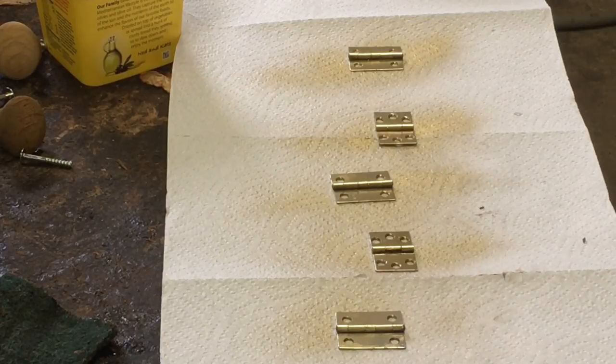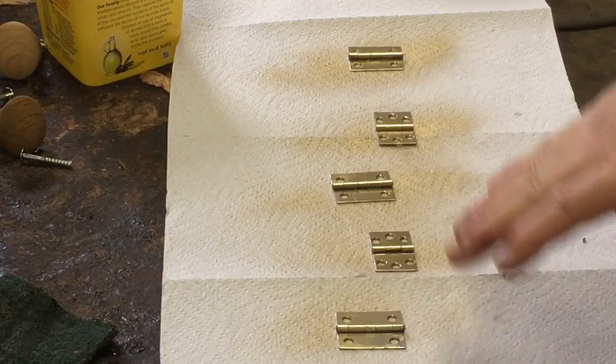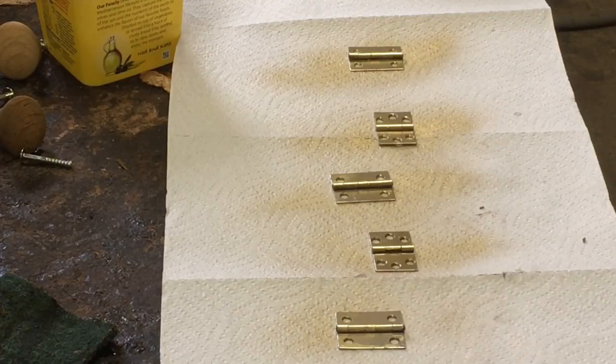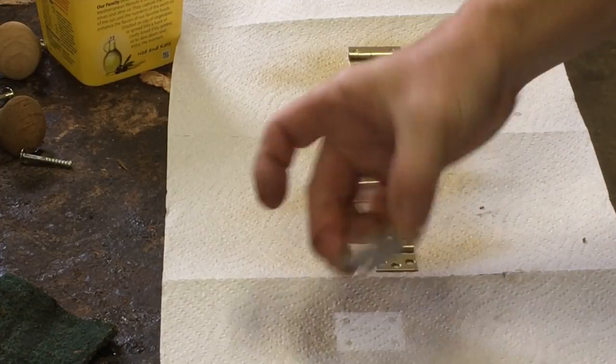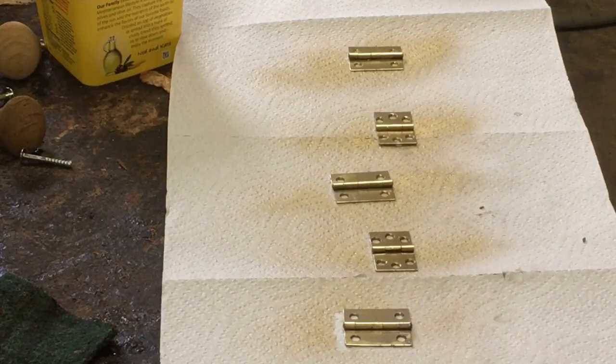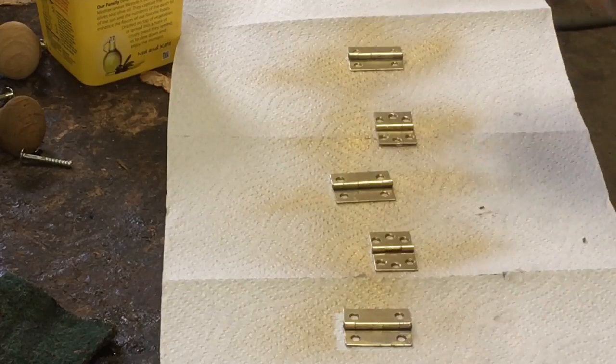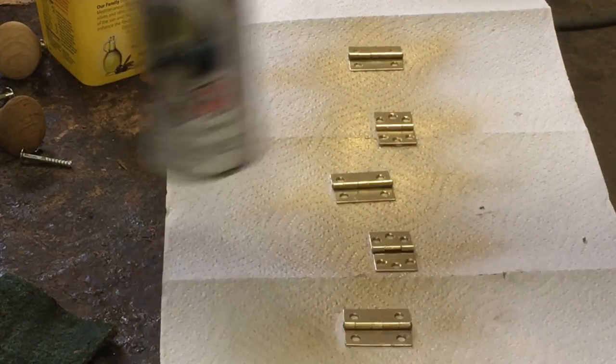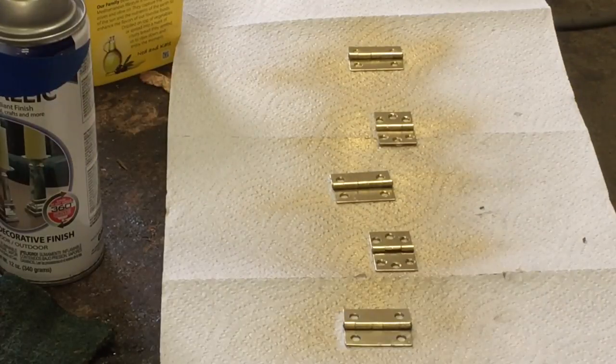We just do light coats. First we do a couple of coats on one side. We'll get it dry. Then we'll flip them over and do the same thing on the other side. That's pretty much all you need, just a couple light coats.